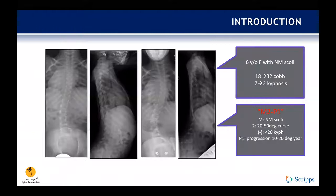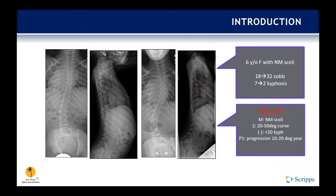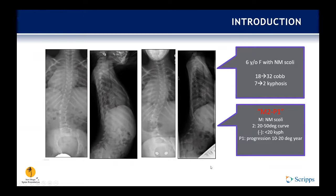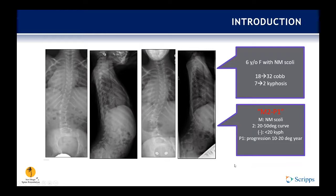Here's an example of how the classification scheme can be implemented. A six-year-old with a neuromuscular curve who has gone from an 18-degree to a 32-degree Cobb angle, with kyphosis decreasing from seven to two degrees, is classified as M2-negative-P1: M for neuromuscular, 2 because the curve is 20 to 50 degrees, negative because kyphosis is less than 20 degrees, and P1 for progression of 10 to 20 degrees per year. This illustrates how the classification helps clinicians discuss patients.